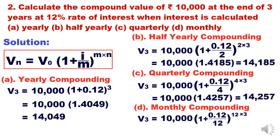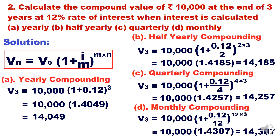For monthly compounding: V3 = 10,000 × (1 + 0.12/12)^(12×3). The denominator is 12 because compounding occurs 12 times per year. Simplifying, the factor is 1.4307, giving ₹14,307. Note: if it were two-month compounding, frequency would be 6, so you'd use 6 as the denominator.